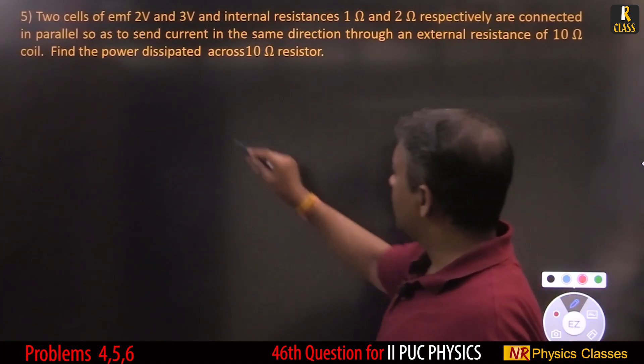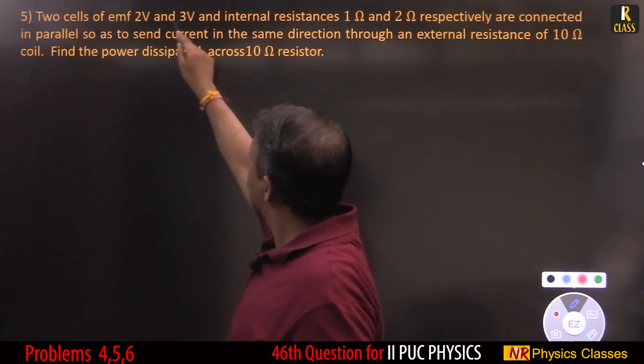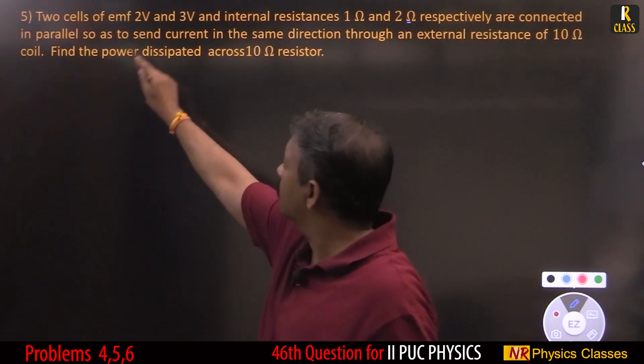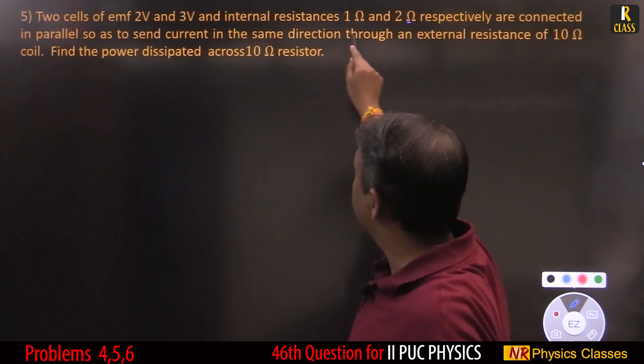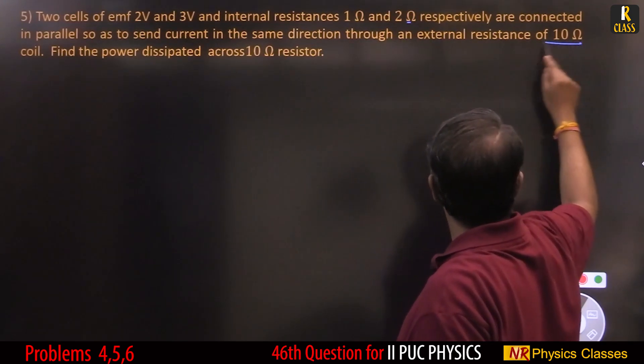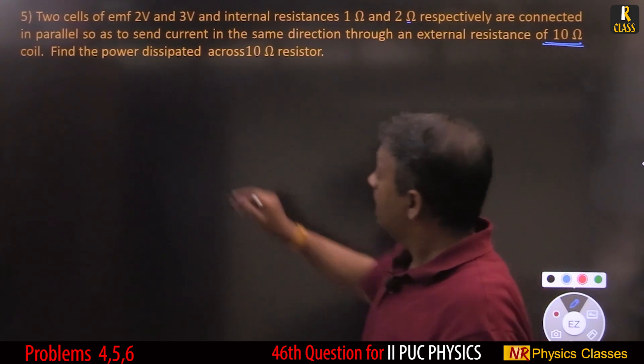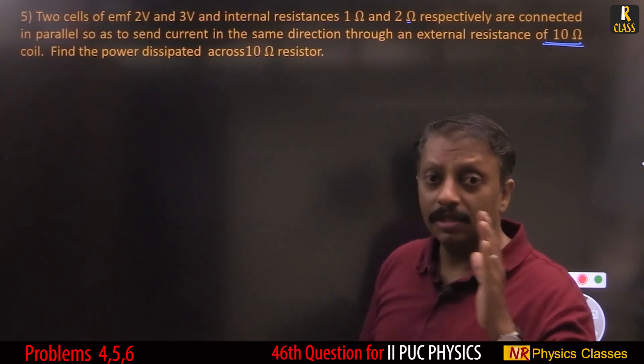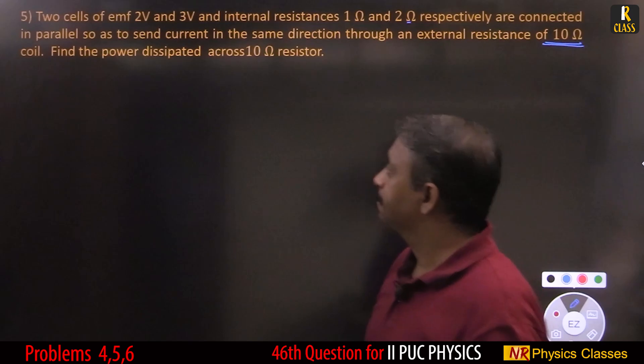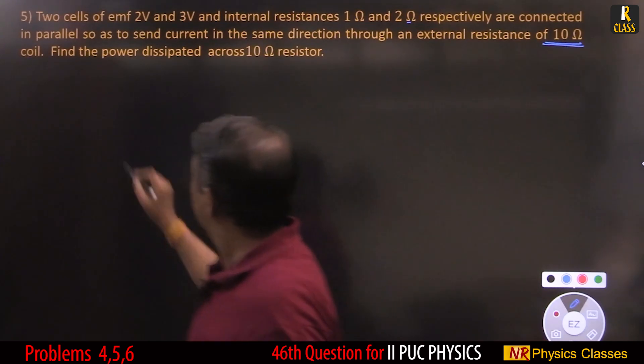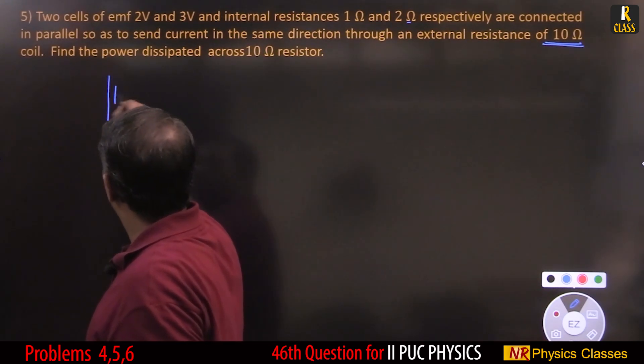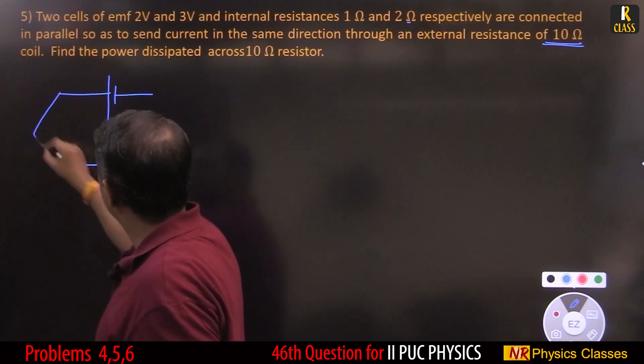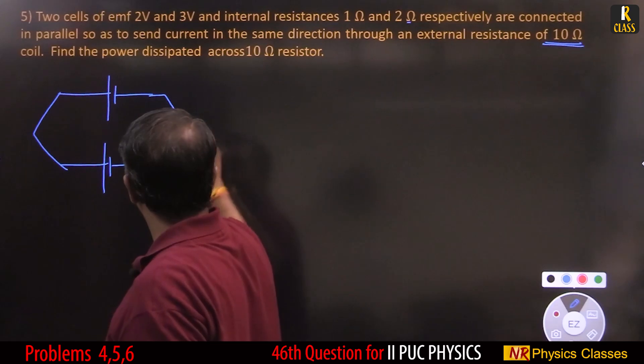Next problem: 2 cells of EMF 2 volt and 3 volt with internal resistances 1 and 2 ohm respectively are connected in parallel so as to send current in the same direction through an external 10 ohm. Find the power dissipated across 10 ohm. Previous problem was on potential difference, now this is power.